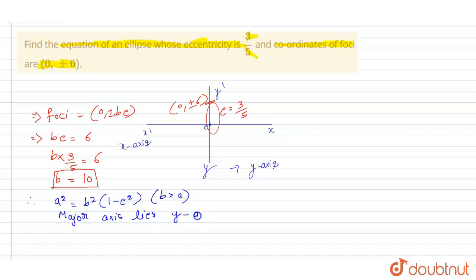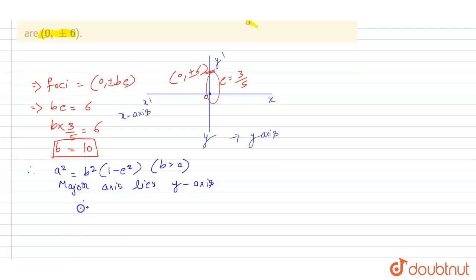Therefore, a² = 100 × (1 - 9/25). After calculation, you can get a² = 64.